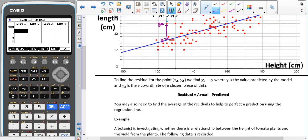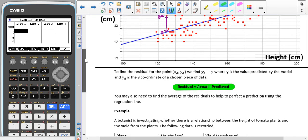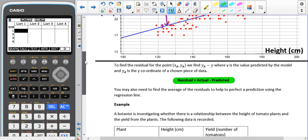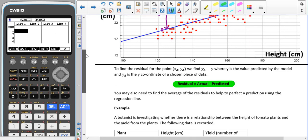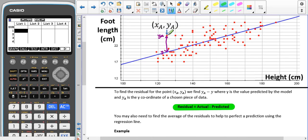The actual formula we are using is: residual equals actual value of the data minus the predicted value from the regression line. We may also have to find the average of these figures to perfect a prediction using the regression line.